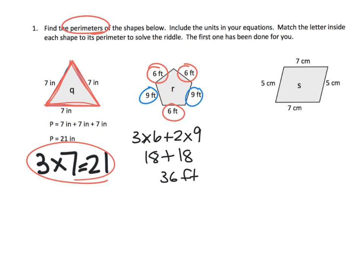Lastly, right here, our students have a lot of choices. They could do 5 plus 7 plus 5 plus 7, or they could say that's 2 times 5 plus 2 times 7. Some of your students might even say, hey wait a second, we can add 5 plus 7 and then multiply by 2.